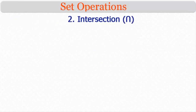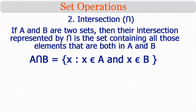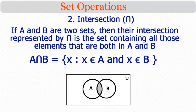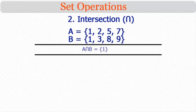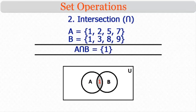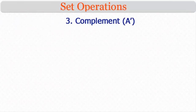Second, the intersection of sets: if A and B are two sets, their intersection — represented by A ∩ B — is the set containing all elements that are in both A and B. That is, A ∩ B = {x : x ∈ A and x ∈ B}. The shaded portion in the Venn diagram represents the intersection. For example, if A = {1, 2, 5, 7} and B = {1, 3, 8, 9}, then A ∩ B = {1}, since 1 is the only common element.